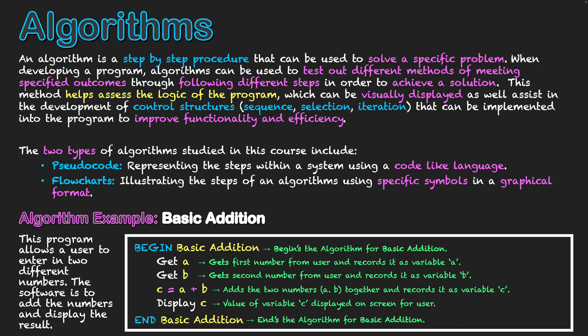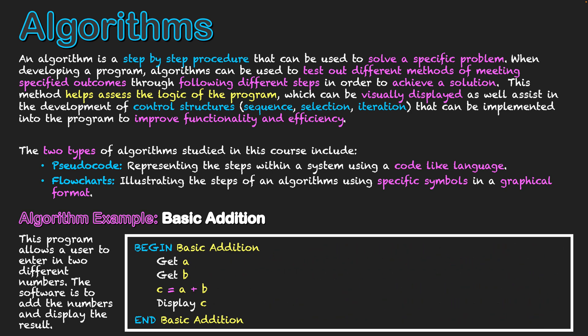And that finalizes my algorithm. Now, as you can see, I've written on a lot of notes here so you guys can understand what's going on in this algorithm. But essentially, that's what the algorithm looks like. They're the steps I'm going to take in order to get my two numbers, add them together, and display them on screen, the actual result of that calculation.